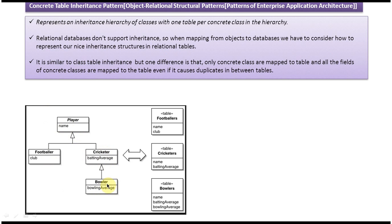How do we represent this inheritance hierarchy in database tables? As per the concrete table inheritance pattern, we define one table for each concrete class. Player is the abstract class, while Footballer, Cricketer, and Bowler are the concrete classes — meaning classes that have full implementation with no abstract methods. So we define three tables. The Footballers table has name and club columns.